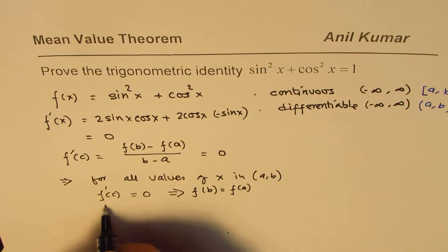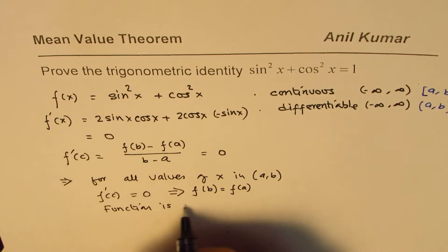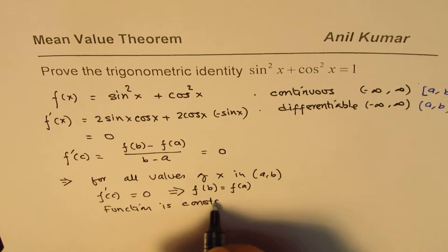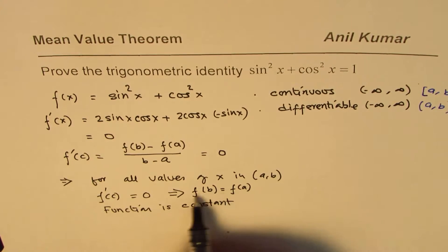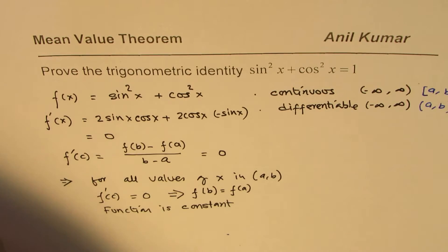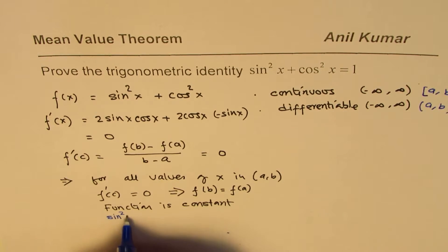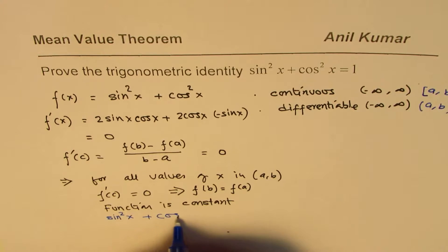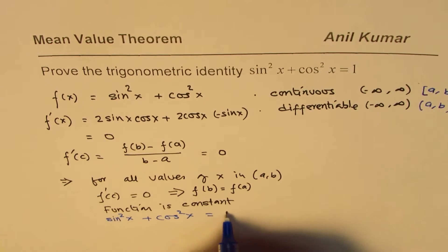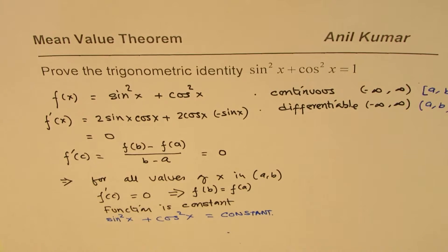That implies the function is constant. Only for a constant function will all these values be equal. So this function f(x) is constant. What we have proved here is that f(x) equals sin squared x plus cos squared x is equal to a constant.